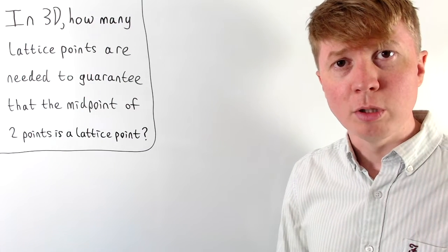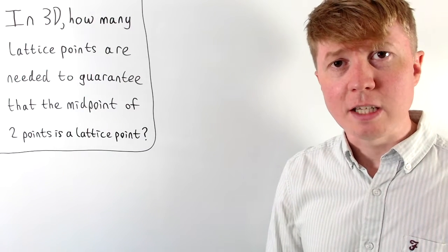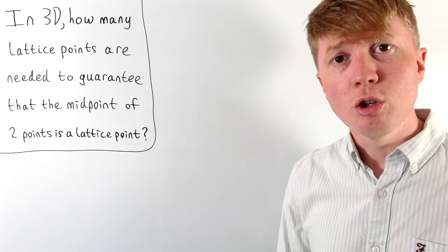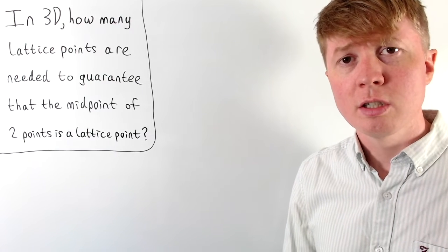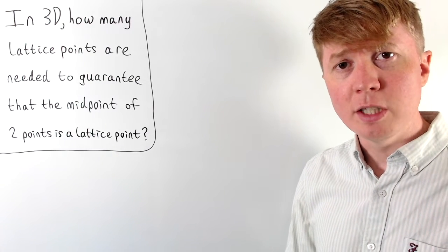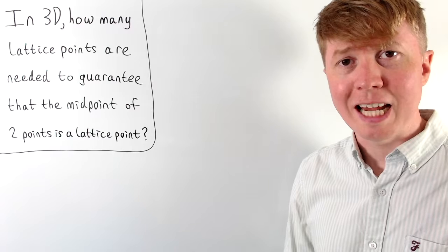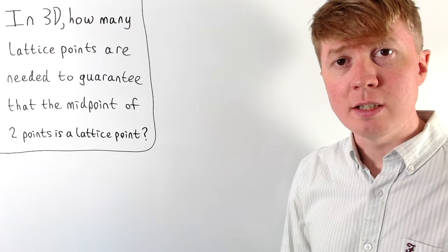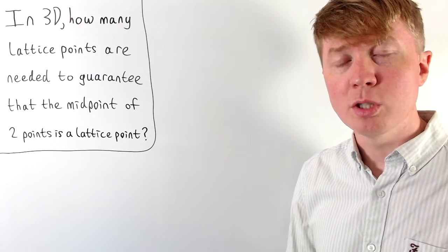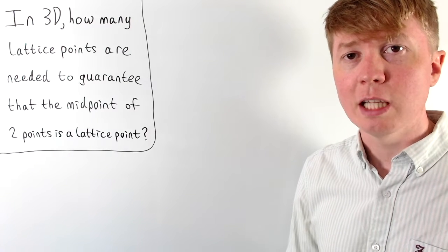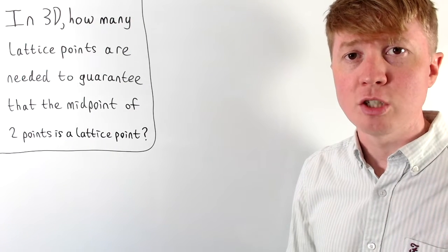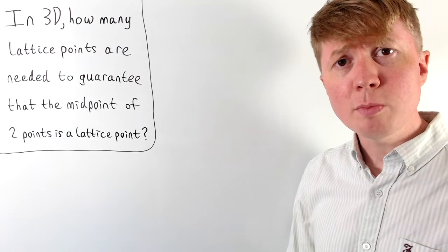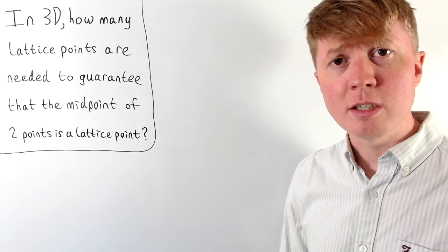We're going to solve this problem where we have lattice points in 3D — points where all of the coordinates are integers. We need to work out how many of these points we need in our collection so that it guarantees that the midpoint between two of our points must also be a lattice point, meaning it must also have all integer coordinates.